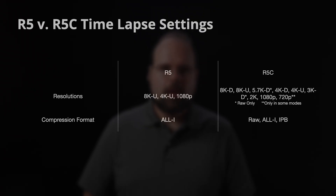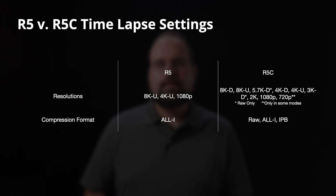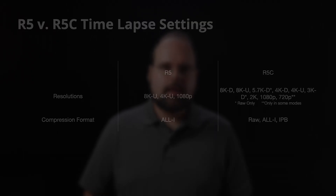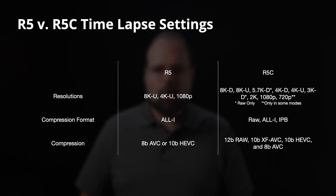That leads us nicely into talking about compression options. On the R5, the timelapse videos are always compressed using the all-I or intra-frame compression format and saved in either 8-bit AVC or 10-bit HEVC formats, depending on whether you've enabled HDR PQ. On the R5C, the timelapse sequences can all be shot in both all-I or intra-frame compression or IPB — identified as long GOP on the R5C — as well as in RAW.